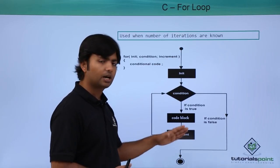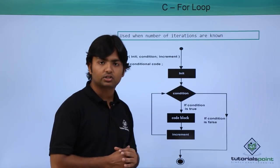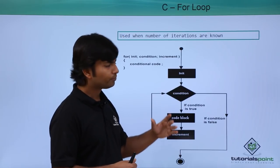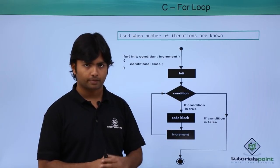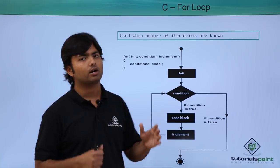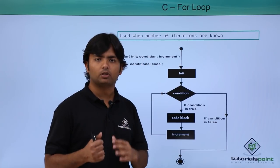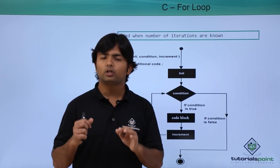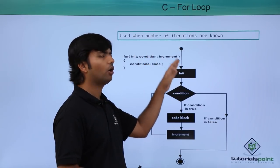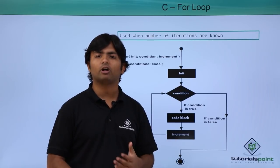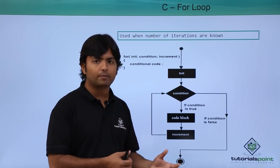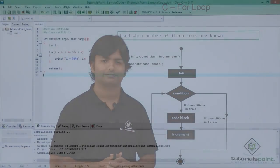After the update, the condition is checked again before re-entering the loop. This continues as long as the condition is true; as soon as the condition is false, the loop is terminated. Keep in mind that all three statements inside the for loop are optional, but you must pass the two semicolons — omitting them is a syntactical error. If you omit the initialization, condition, or increment, by default it will be an infinite loop.